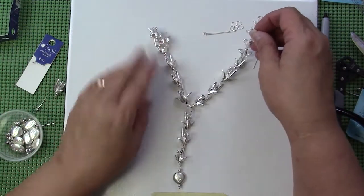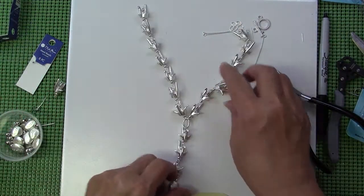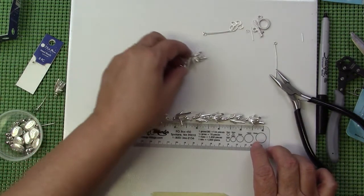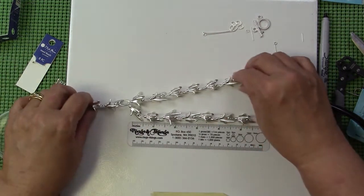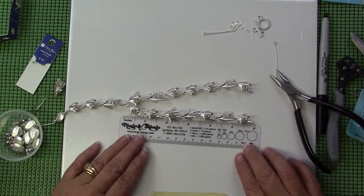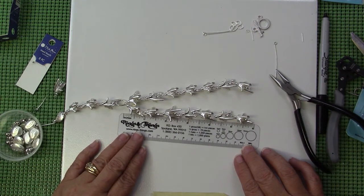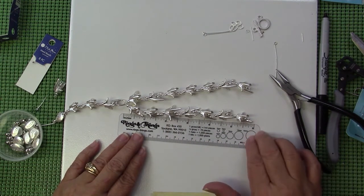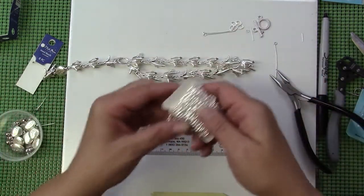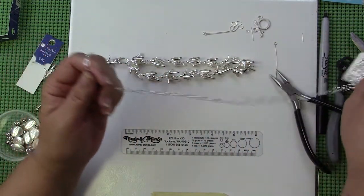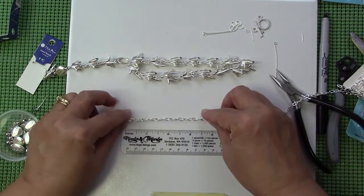You can see how the basic Y construction comes together. Then what I'm going to do is measure the seven pieces because this is going to be about an 18 inch necklace. I've got about six inches there so that means I need to add about three inches of chain on each side to make about 18 inches. You could adjust that of course depending on the size of your clasp and how far you want this to drop.